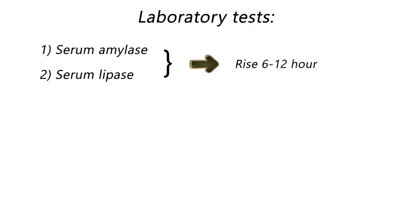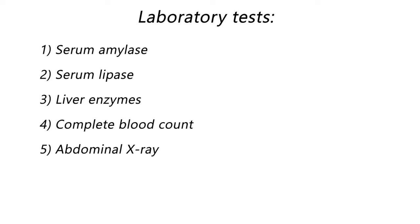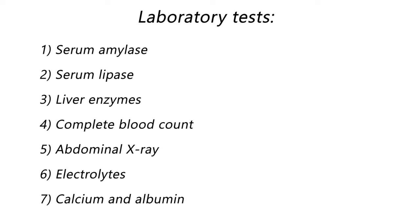Amylase and lipase usually rise 6 to 12 hours after the onset of acute pancreatitis. Liver enzymes and complete blood count should be ordered, because both intestinal obstruction and pancreatitis can lead to leukocytosis. Abdominal radiography is a great choice to find out if there is obstruction in the intestine. Electrolytes, calcium, and albumin should be obtained to rule out other possible causes.